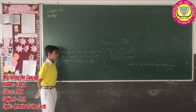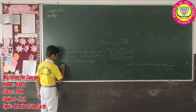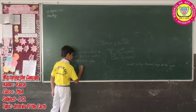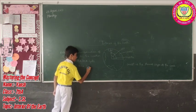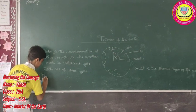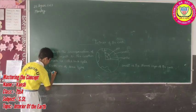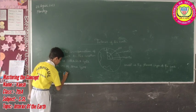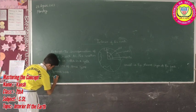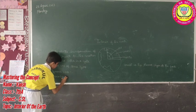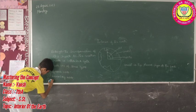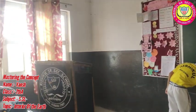Next is the rock cycle. Rocks are formed in three types. The first is igneous rock, the second is sedimentary rock, and the third is metamorphic rock.